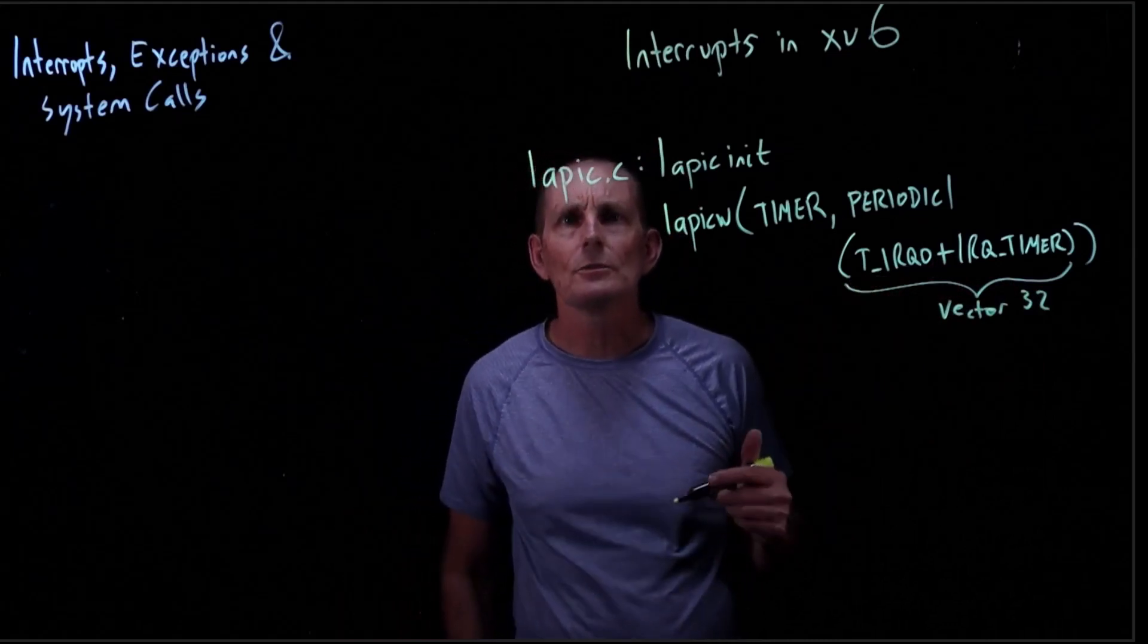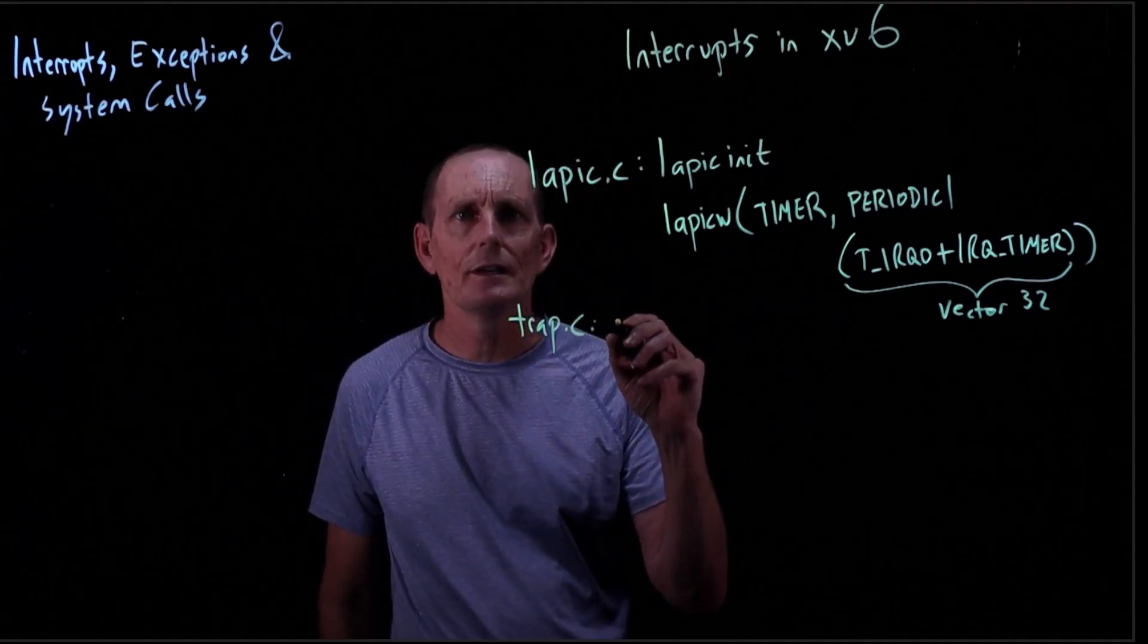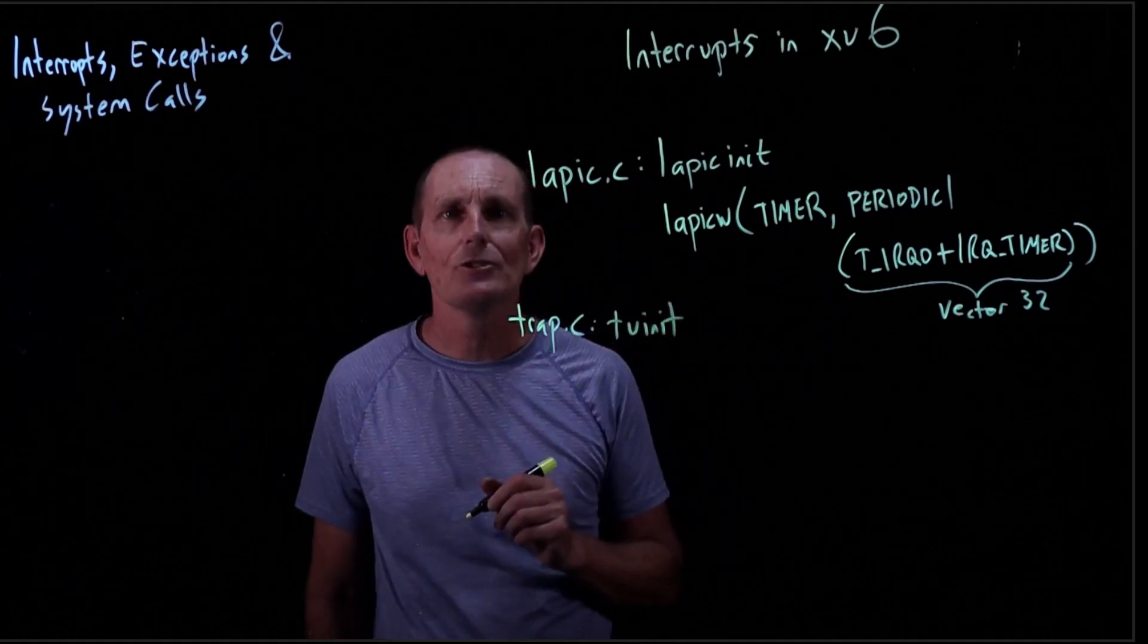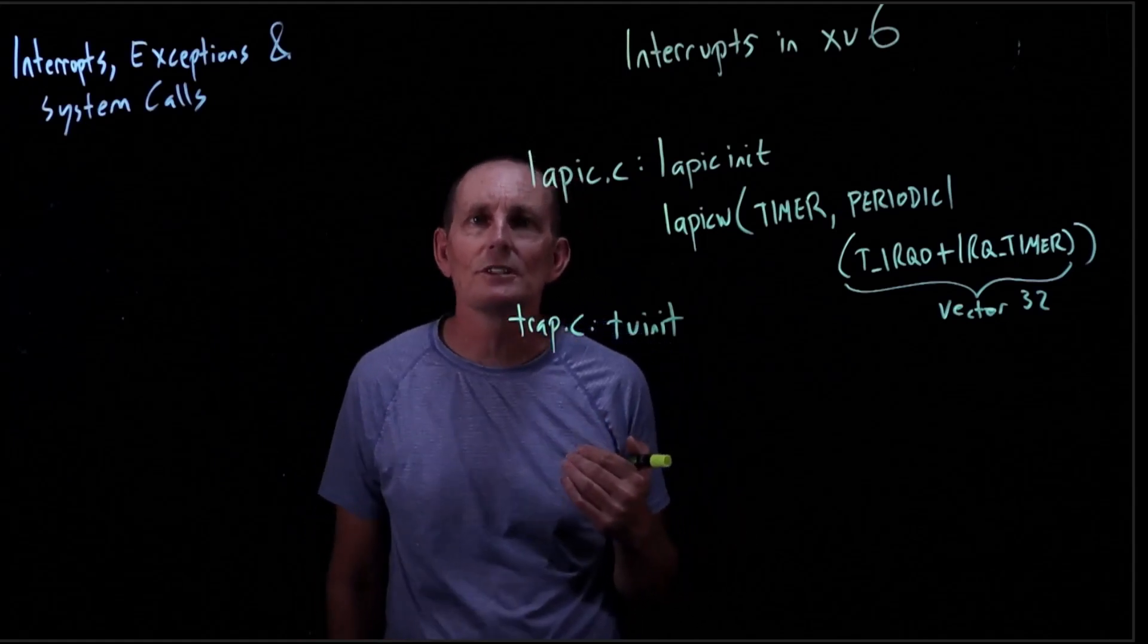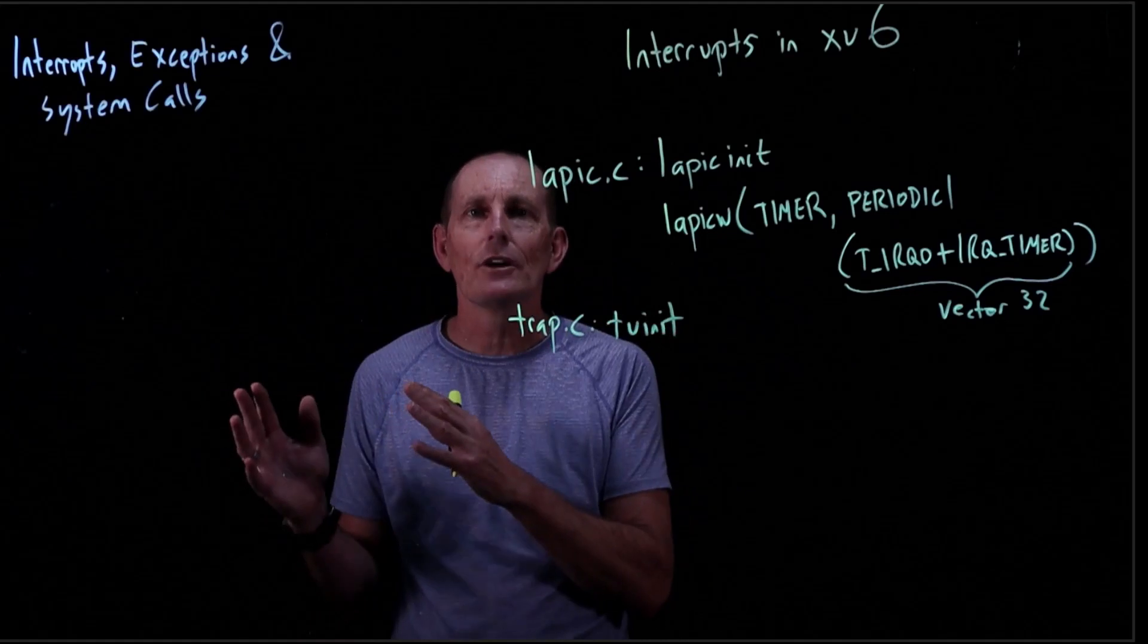What else do we do? Well, in trap.c, we have the trapVectorInit. And trapVectorInit goes ahead and initializes the interrupt descriptor table, and it makes it so that entry i points to code at vector i.